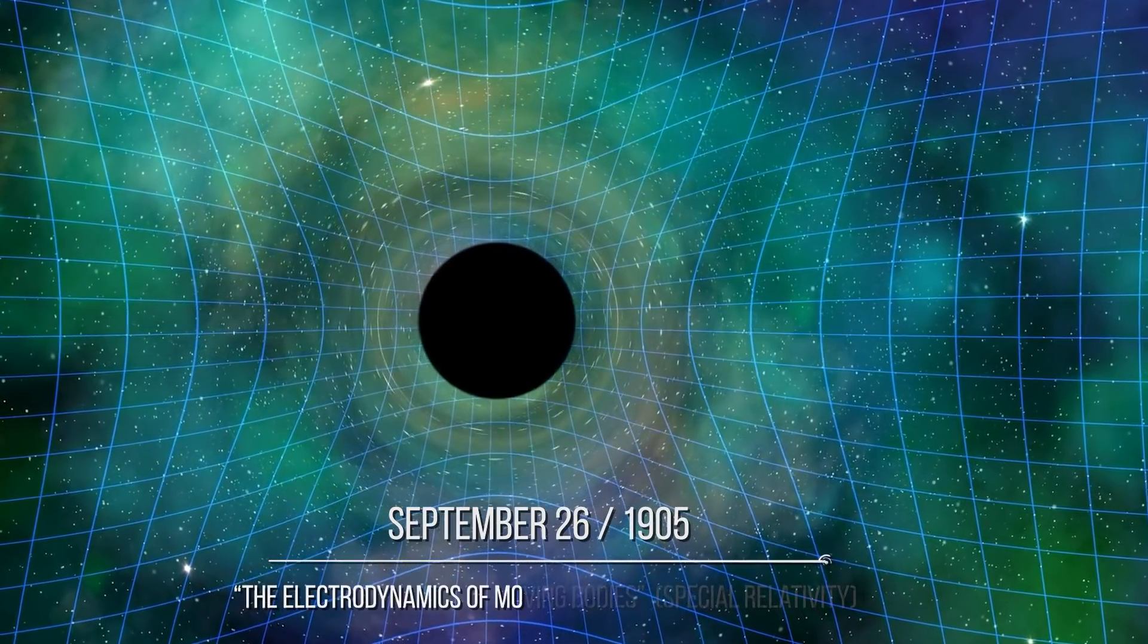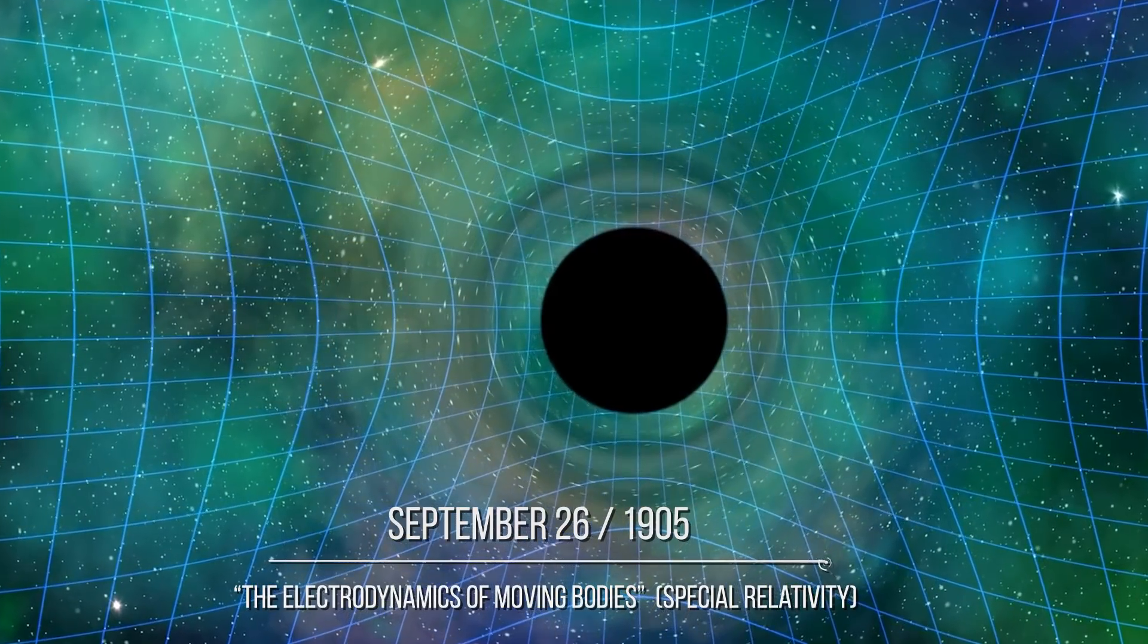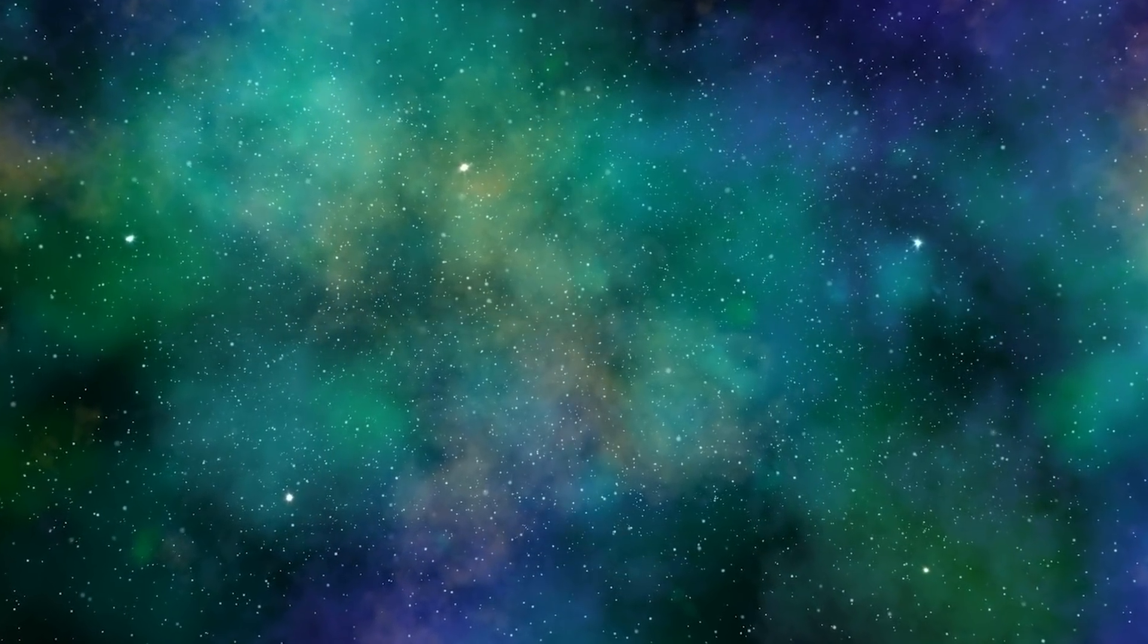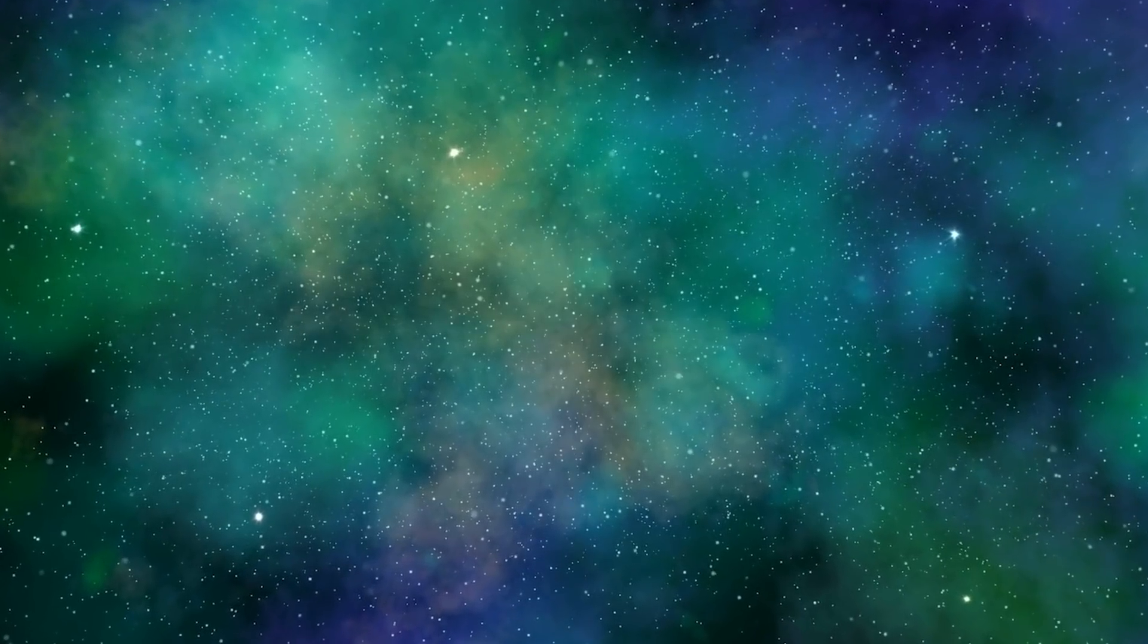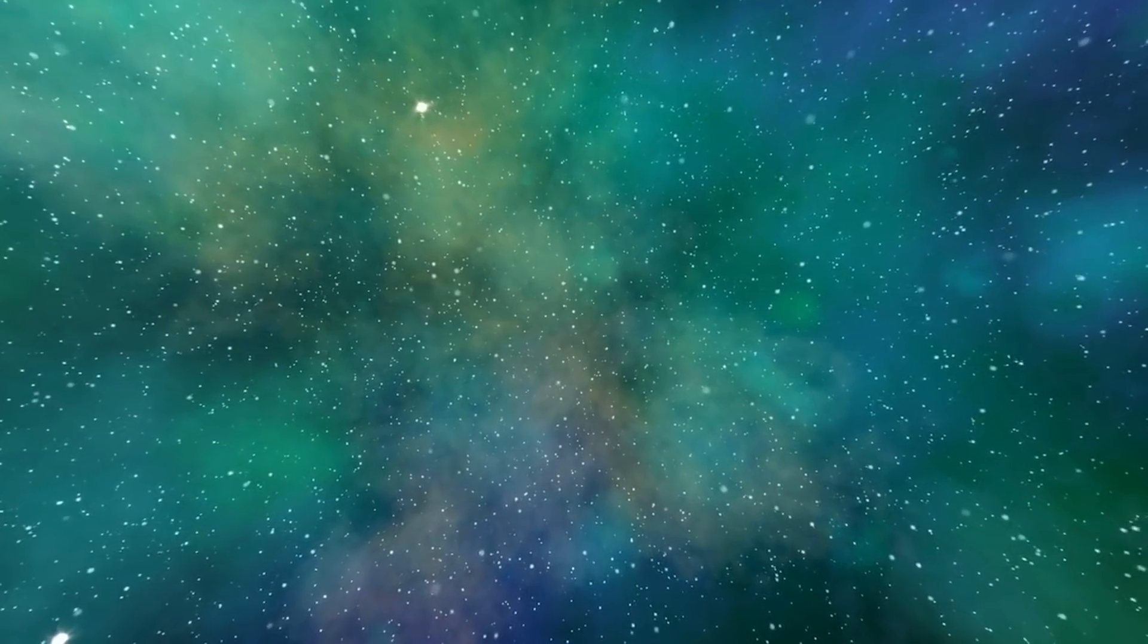On September 26, the electrodynamics of moving bodies was released. Today we call it special relativity. What is often overlooked is that to formulate special relativity, Einstein had to reform all physics starting from the classical mechanics of Galileo. In fact, he fixed some inconsistencies that had arisen with the development of Maxwell's electromagnetism and then replaced the concept of ether, which had created so many problems for physicists for so many centuries with that of spacetime.